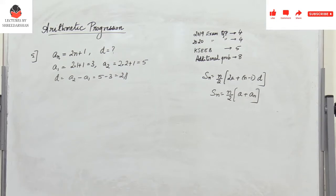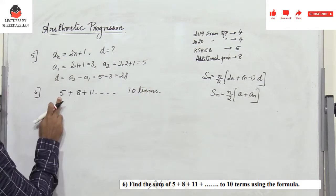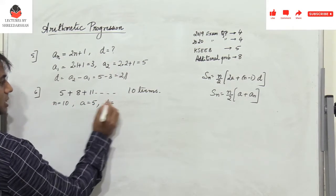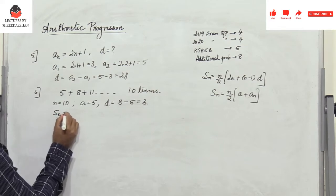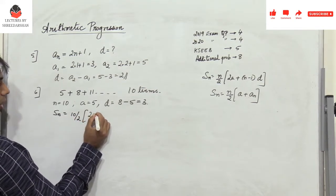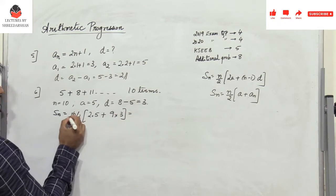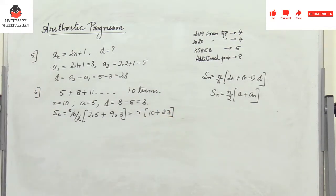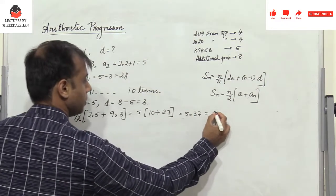This one-mark problem appeared in June 2020: find the sum of the arithmetic progression 5 + 8 + 11 up to 10 terms. Here n = 10, a = 5, d = 8 - 5 = 3. Using the formula: S₁₀ = 10/2 × (2×5 + 9×3) = 5 × (10 + 27) = 5 × 37 = 185.